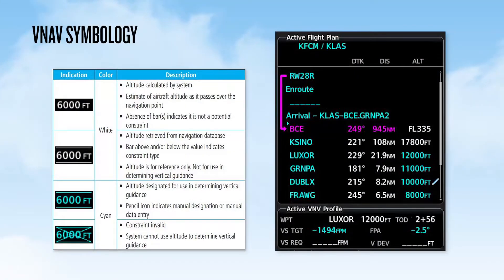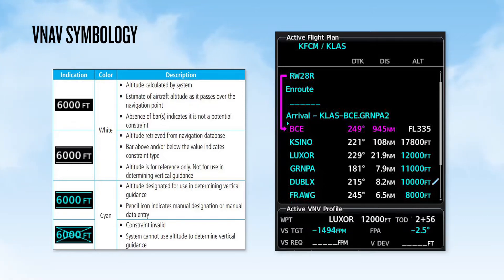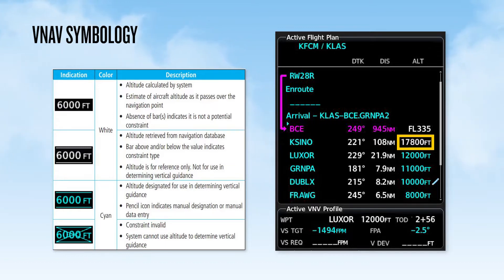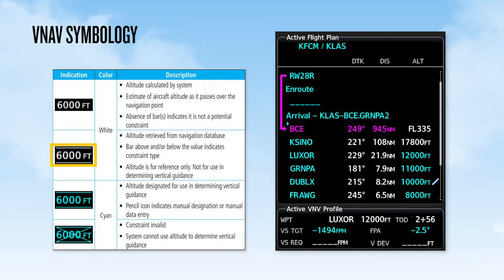On the active flight plan page, you will see altitudes depicted in either white or cyan font, and some altitudes may have lines above, below, or both above and below the number. An altitude displayed in white with no lines above or below is an altitude calculated by the system and provides an estimate of your altitude as you pass over a waypoint. If the altitude depicted in white has lines above and/or below it, it's an altitude constraint pulled from the navigation database, but is for reference only. These are not used in determining VNAV guidance.